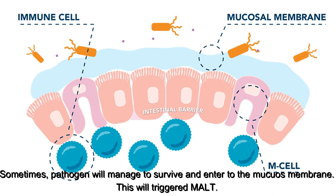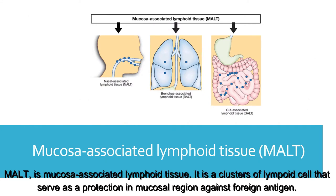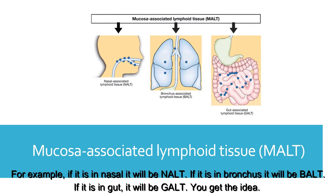Sometimes, pathogens will manage to survive and enter into the mucous membrane. This will trigger MALT. MALT is mucosa-associated lymphoid tissue — a cluster of lymphoid cells that serve as protection in the mucosa region against foreign antigens. MALT can be further classified based on location. For example, if it is nasal, it will be NALT; if it is bronchus, it will be BALT; if it is in the gut, it will be GALT. You get the idea.